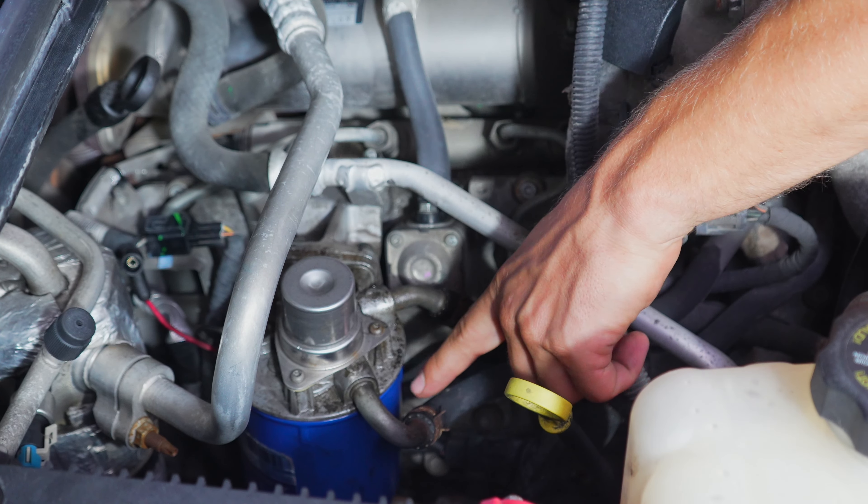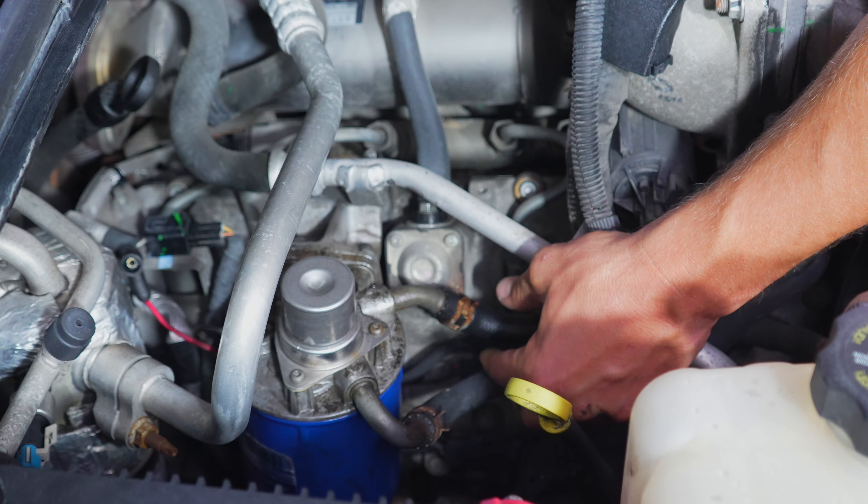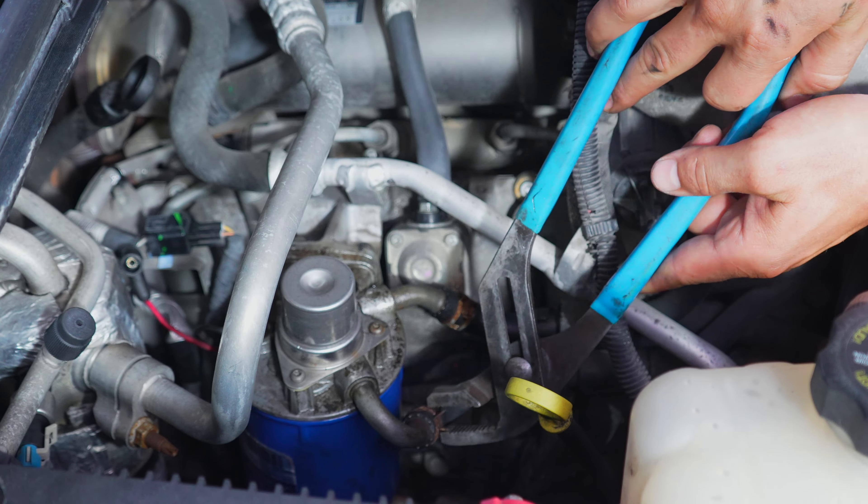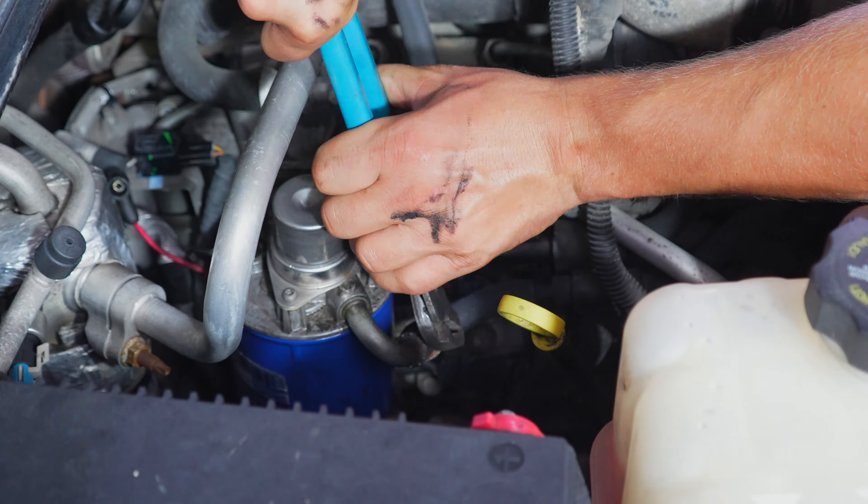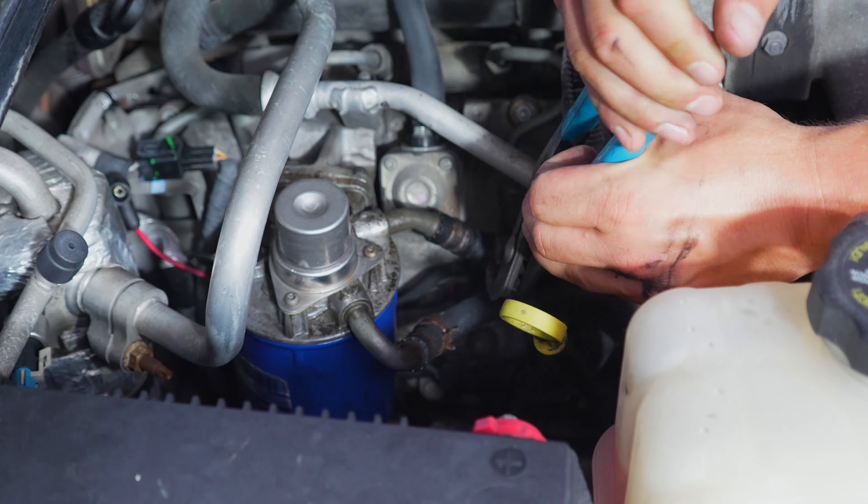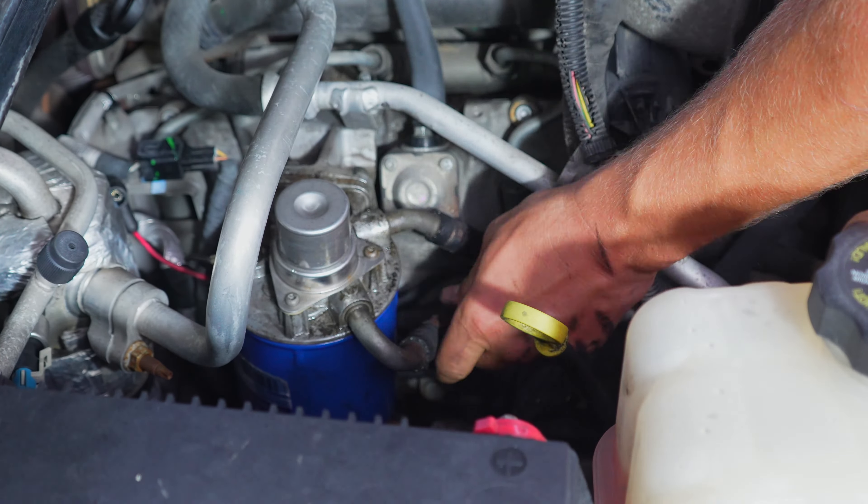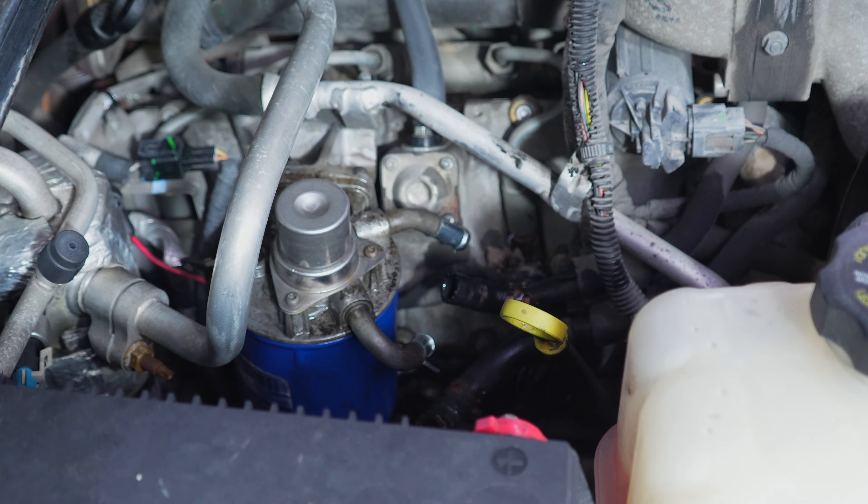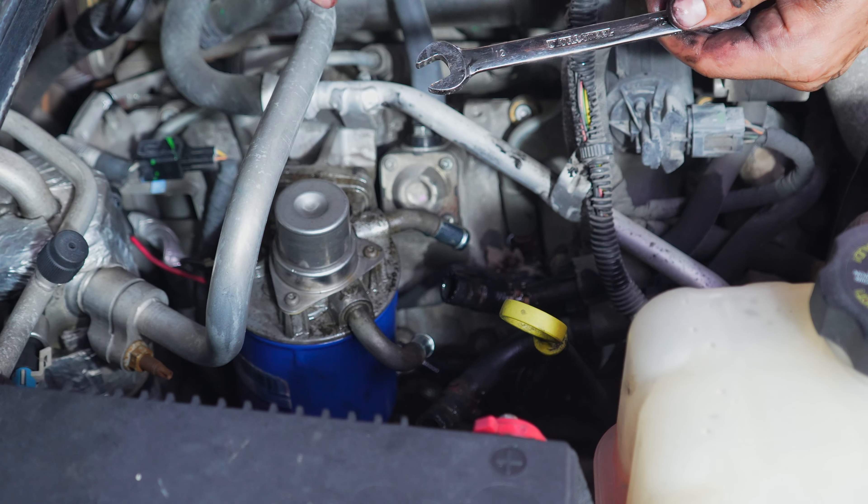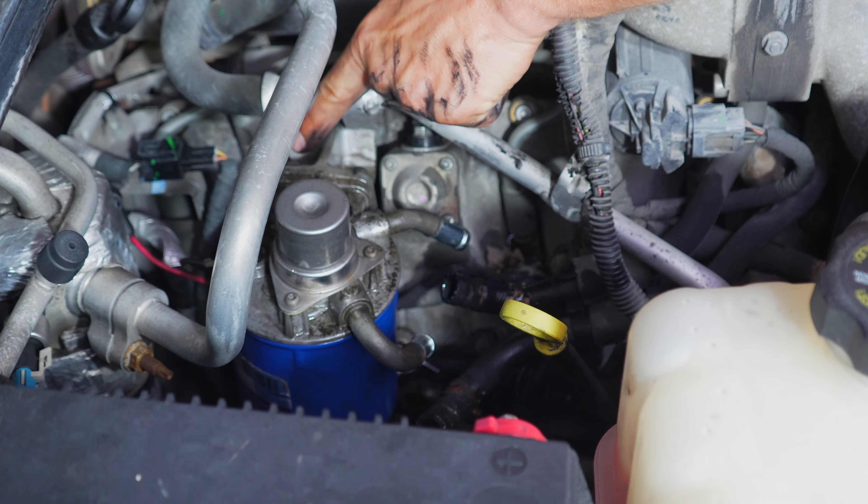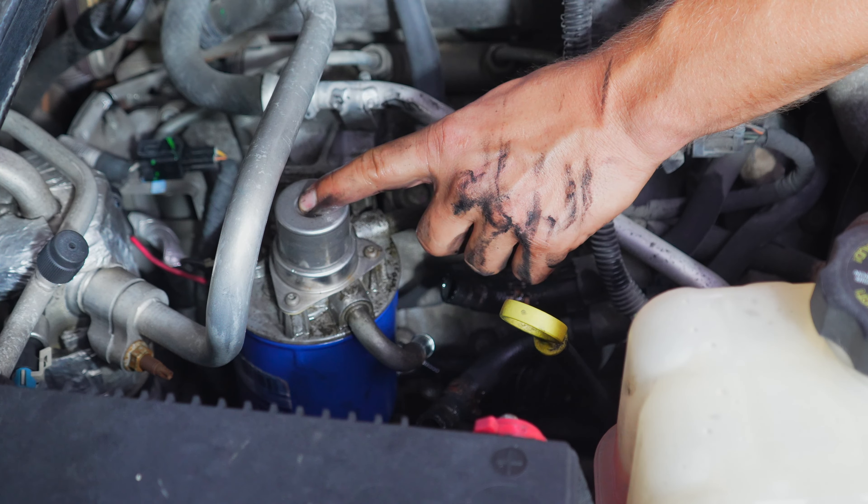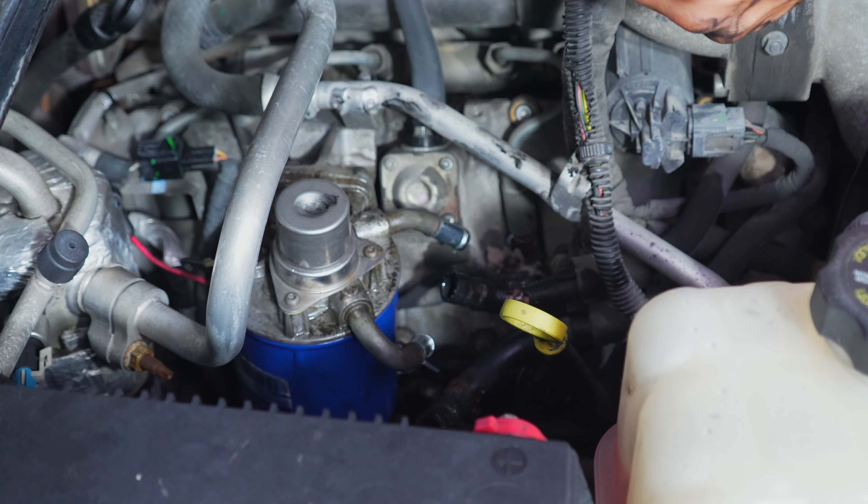Next, I'm going to remove these two hose clamps and take these two hoses off and move them out of the way. I'm going to use a 12 millimeter wrench to take these two bolts loose and then we'll be able to take this entire housing and filter completely out.